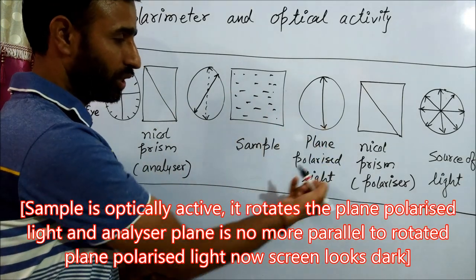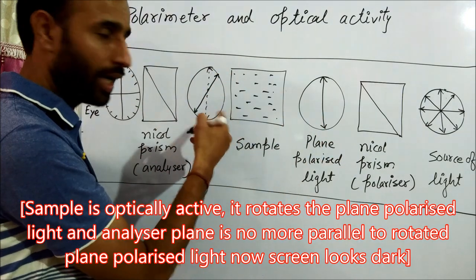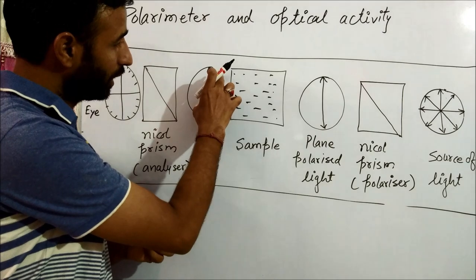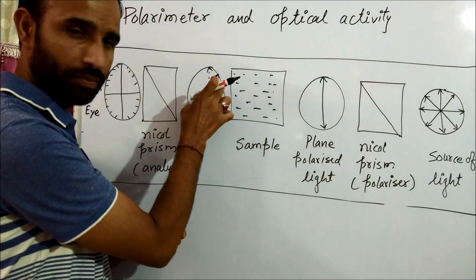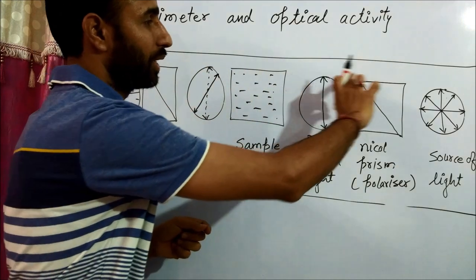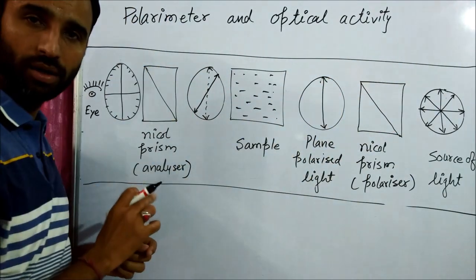The plane of the light can rotate either to the right or to the left. Now, if it rotates to the right, that means now there is darkness because this plane, this plane, these planes are parallel.